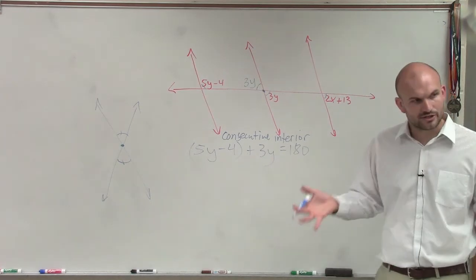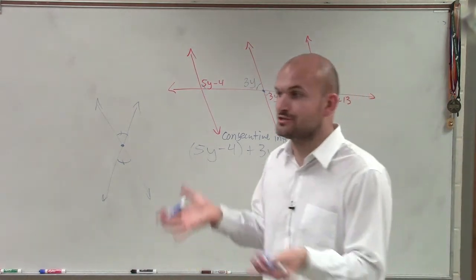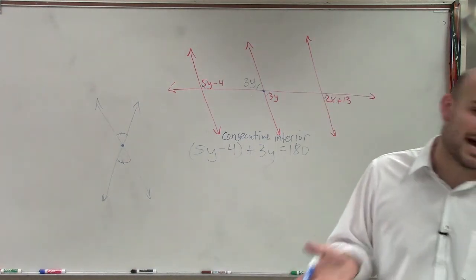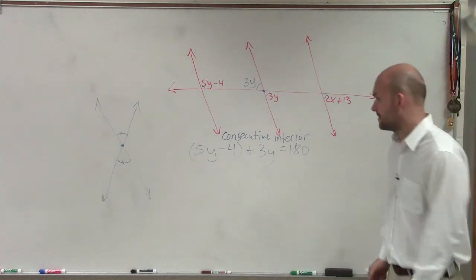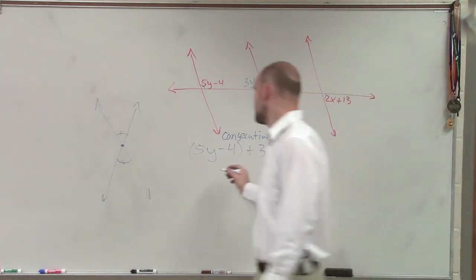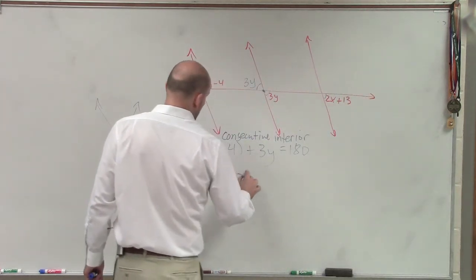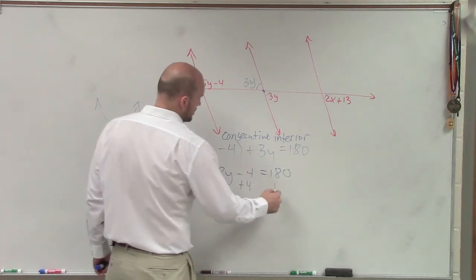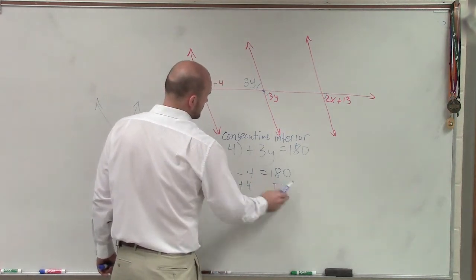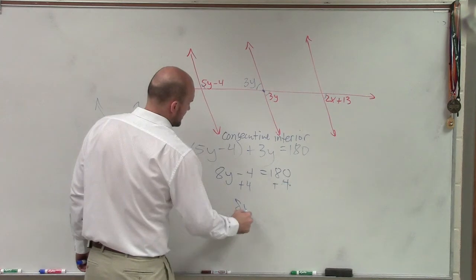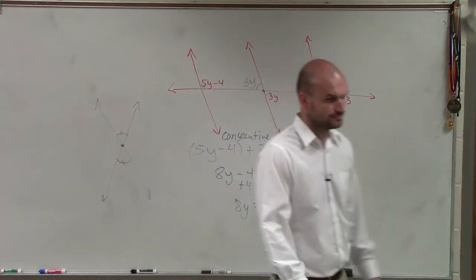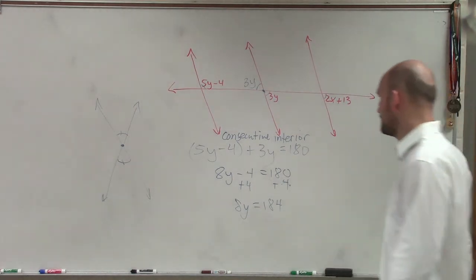Do not write an equation and not tell me where that equation came from. All right? Make sure you guys, if you're writing an equation, because two angles are consecutive interior, or they're vertical angles, or whatever, you need to tell me that's what they are. So therefore, now to solve this, I have 8y minus 4 equals 180. Add the 4, 8y equals 180.